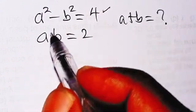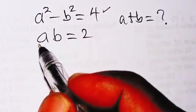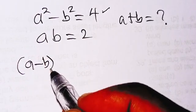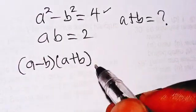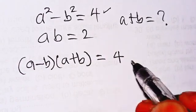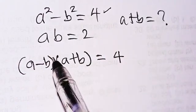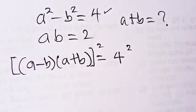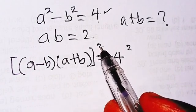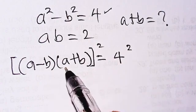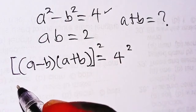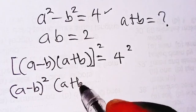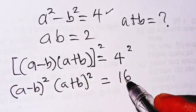I'm going to start from here. This is a difference of two squares and it can be written as (a minus b)(a plus b), and that equals 4. Now I'm going to square both sides. Squaring both sides, I distribute the power inside the parentheses, so I'm going to have (a minus b) all squared times (a plus b) all squared equals 16.